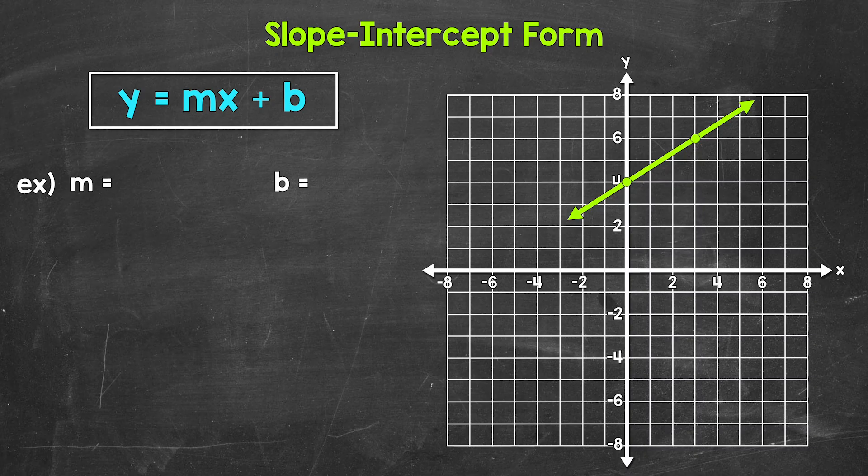with m being the slope and b being the y-intercept. And then x and y are the x and y coordinates of any point on the line.